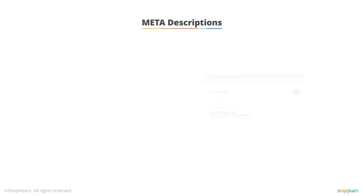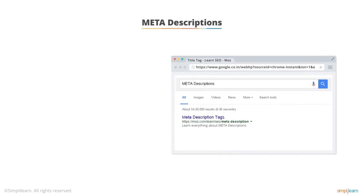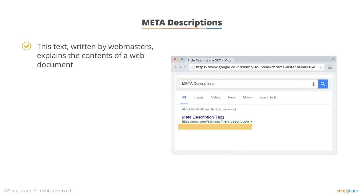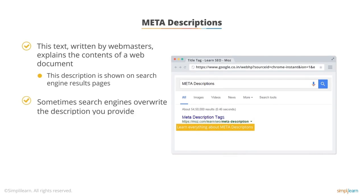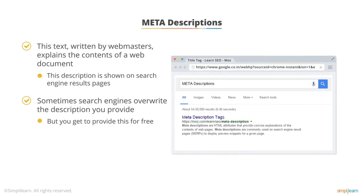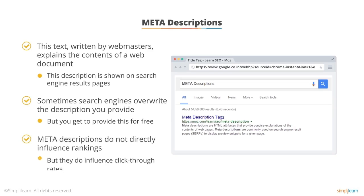Next up, we have meta descriptions. Meta descriptions are a little confusing because it is text we get to provide to search engines, but more often than not, they override what we provide and try to choose something better in their opinion. Sometimes it really is better, but in my opinion, most of the time it's not. The important thing is that we get to provide what we would normally have to pay for with ad copy — for free. We can customize it to entice clicks, and search engines are happy to show that in the search results.